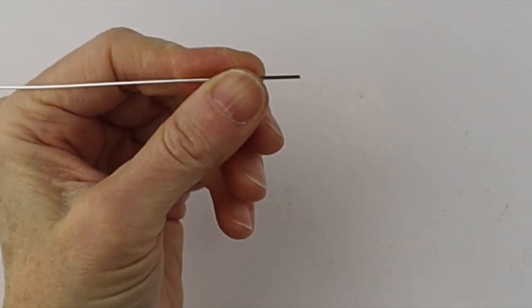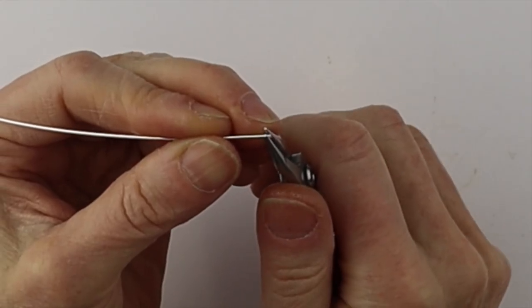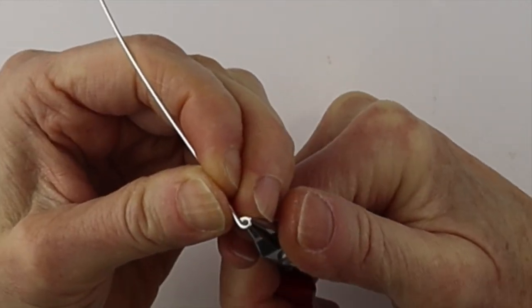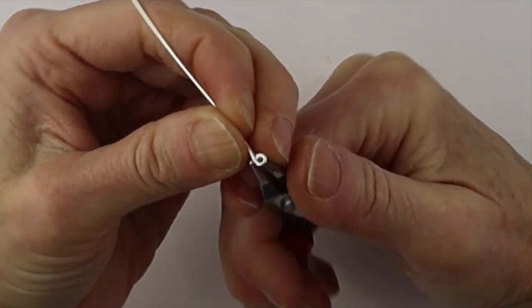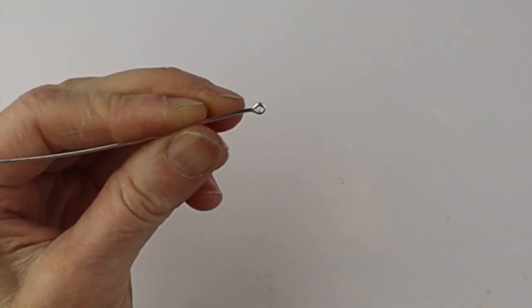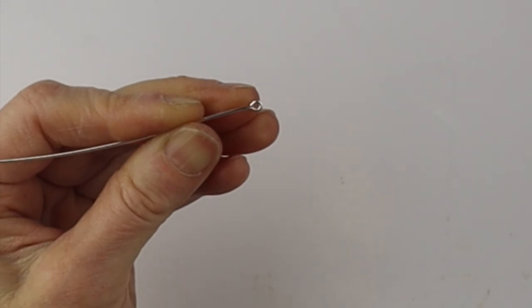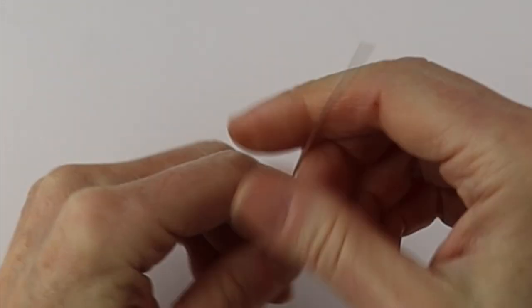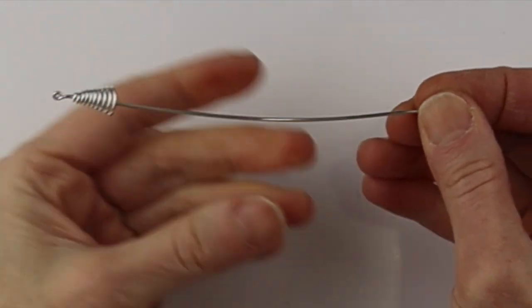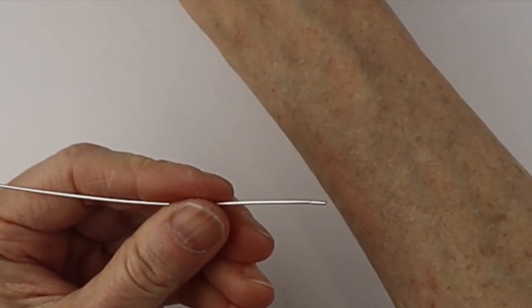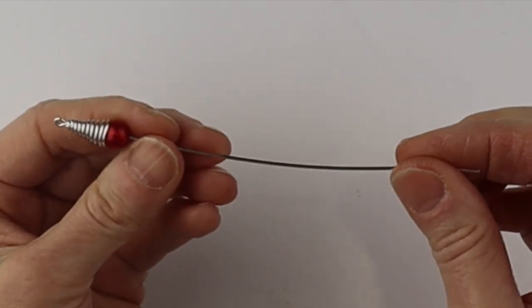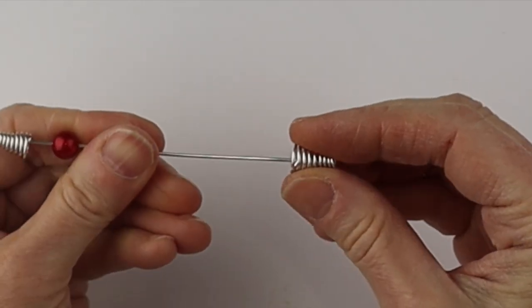Now we're going to take some 18 gauge wire and just do a little loop on the end. Flatten it out so there's no sharp ends and we're going to put the first coil on there and we'll get an eight millimeter miracle bead and the other coil.